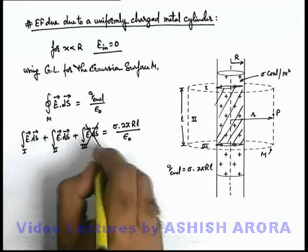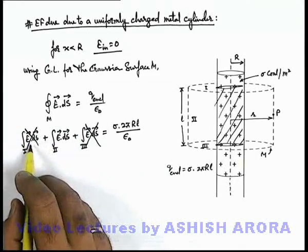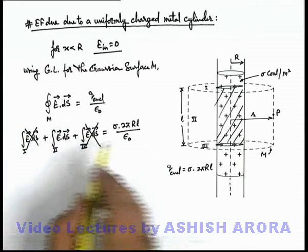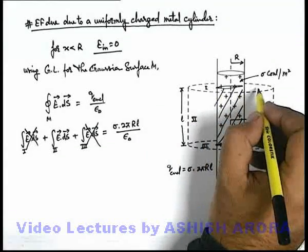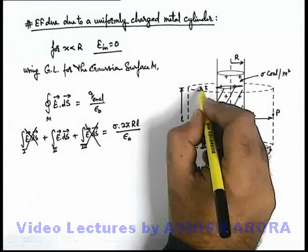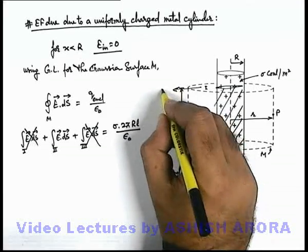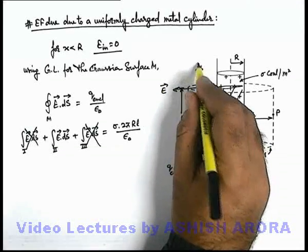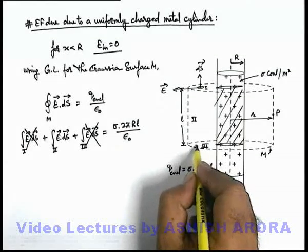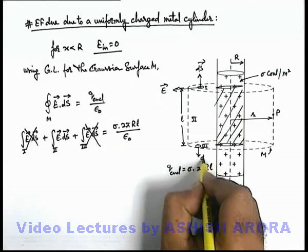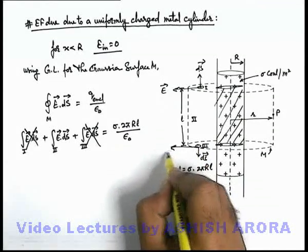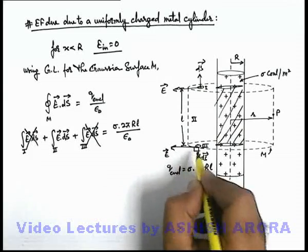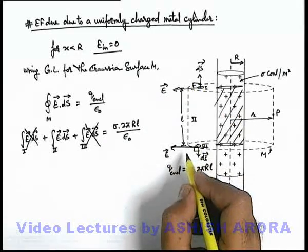Here first and third integral will get vanish because for surface 1, electric field is parallel to the surface and its area dS vector is normal. Similarly for this surface, dS vector is normal to it and electric field is parallel to it. So due to this 90 degree angle it will get vanish.